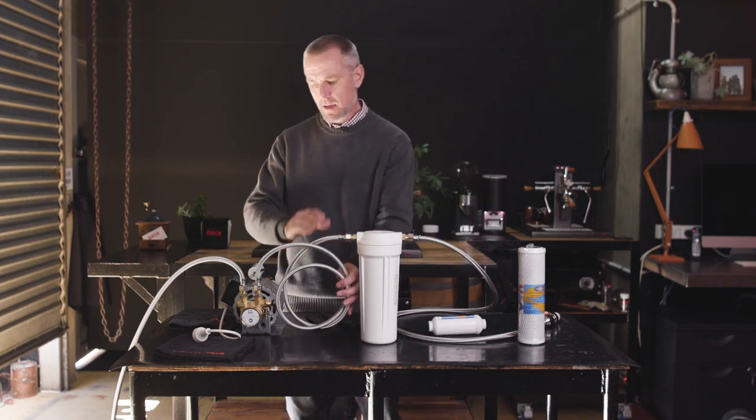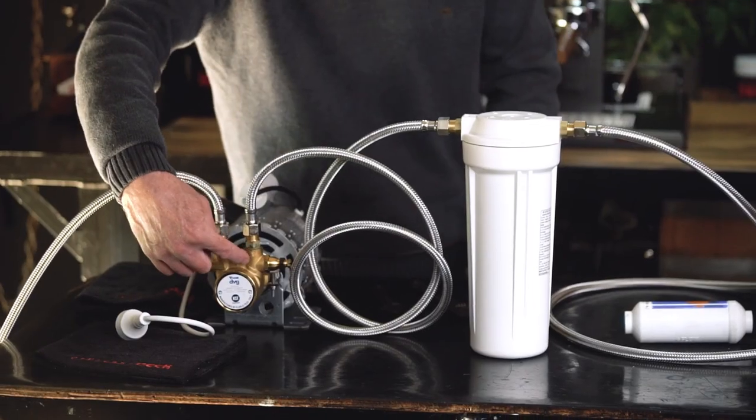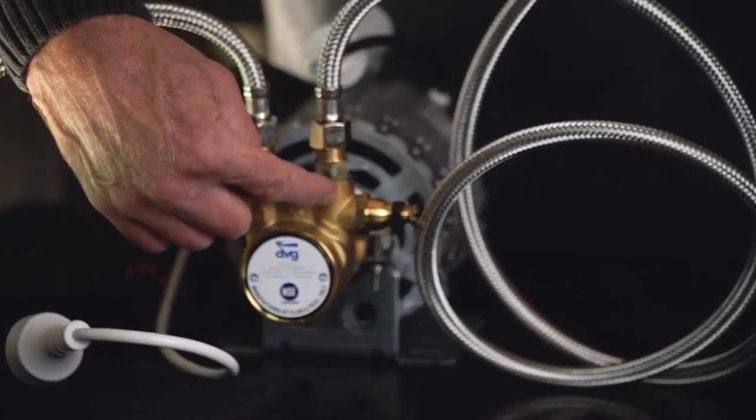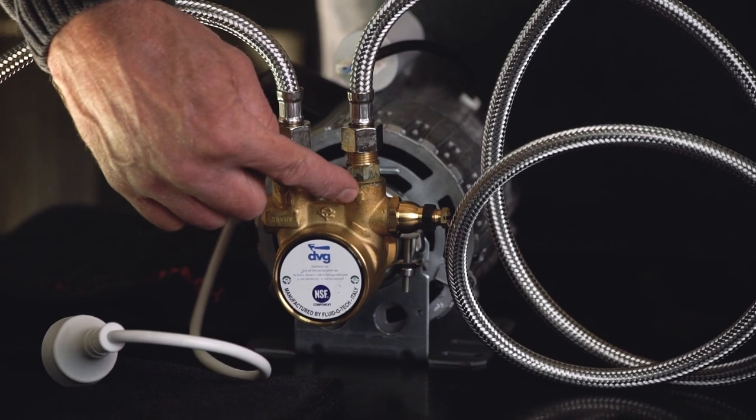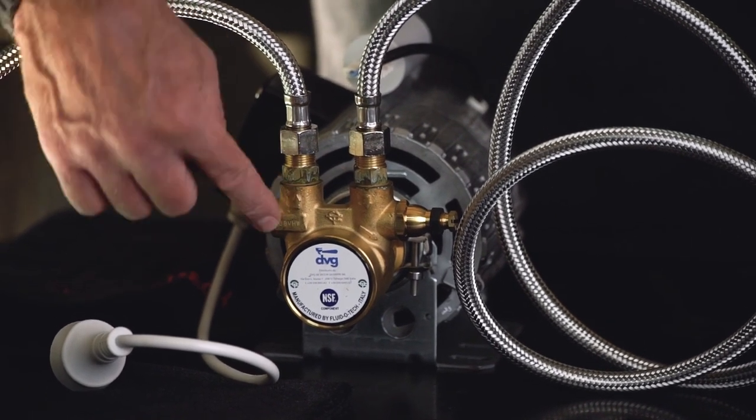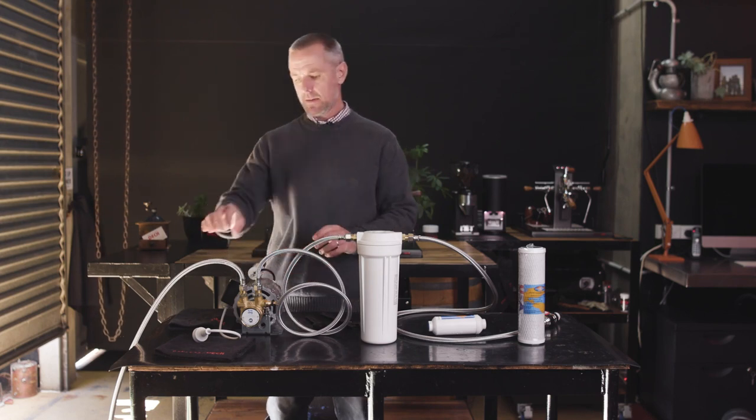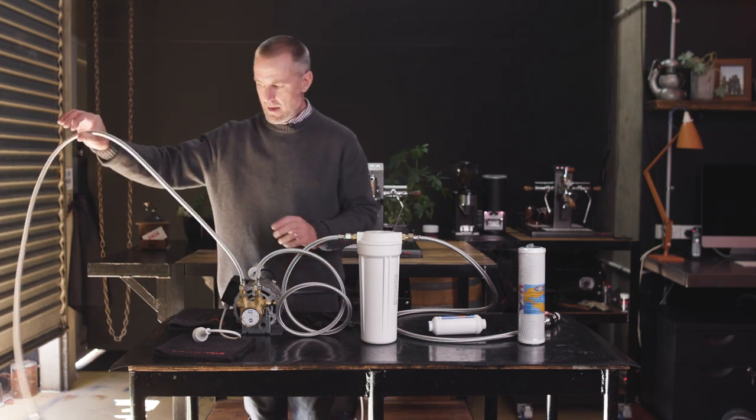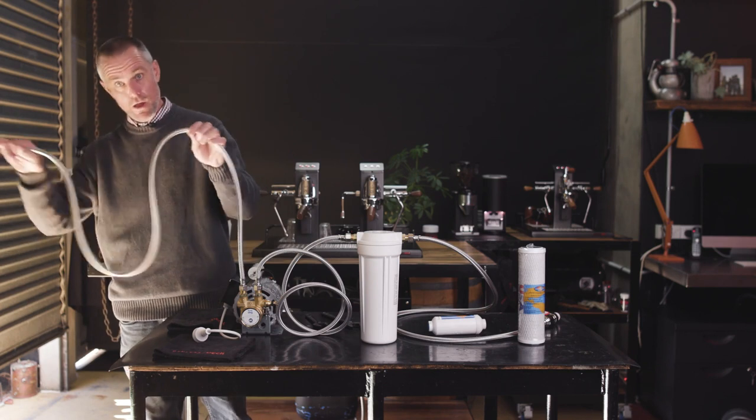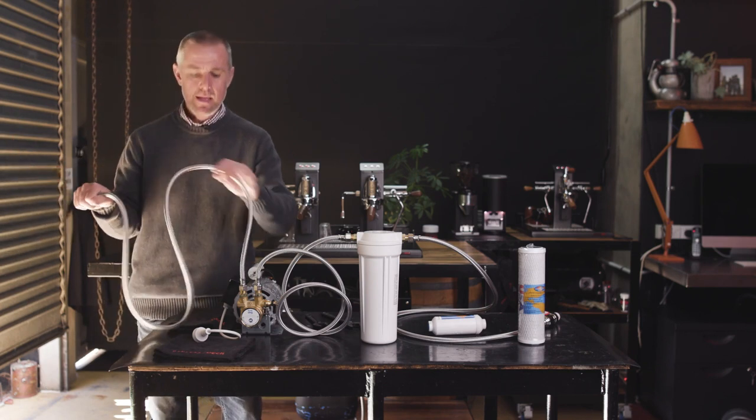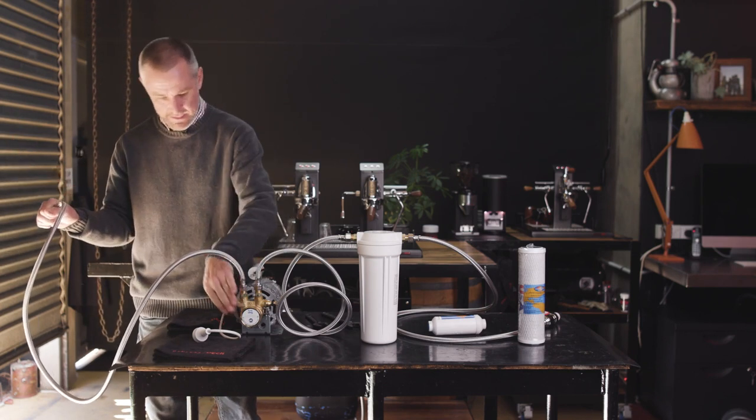And then from there, we go onto the inlet of the pump. So we can see on the pump it's got an arrow in and an arrow out. Obviously the water feed goes to the in direction. And then this one here will be actually coming from your espresso deck and you connect that to there.